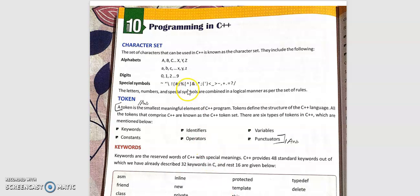So programming in C++ you can relate it to C language. Character set, which you have already learned in C, includes alphabets, digits, and special symbols.